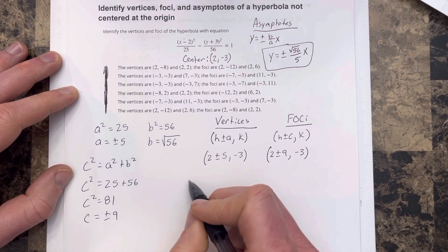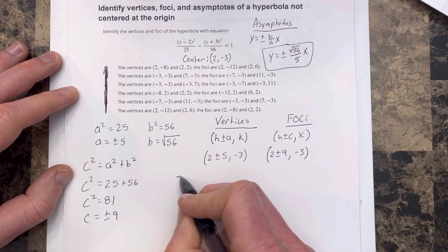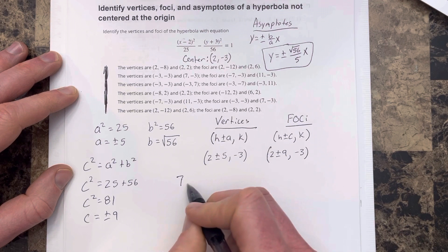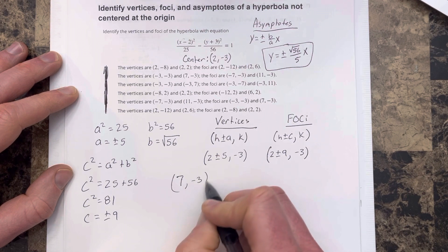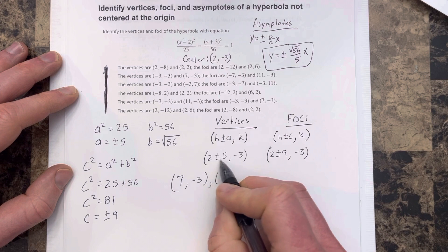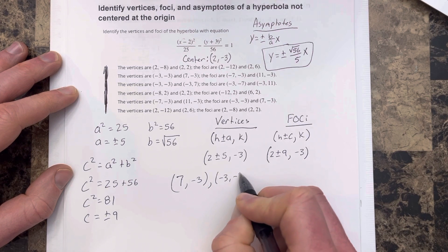I can simplify this to find the vertices. So I'd have 7, comma negative 3, since 2 plus 5 is 7. And then 2 minus 5 would be negative 3, negative 3.